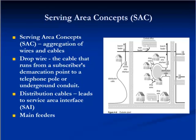According to the SAC, the cable that runs from a subscriber's demarcation point to a telephone pole or underground conduit is called the drop wire. The drop wire connects the subscriber's home or business line to a distribution cable, which gathers multiple drop wires from a neighborhood. Distribution cables then lead to a service area interface, or SAI, a facility in which multiple wire pairs terminate and connect to a cable called a branch feeder.